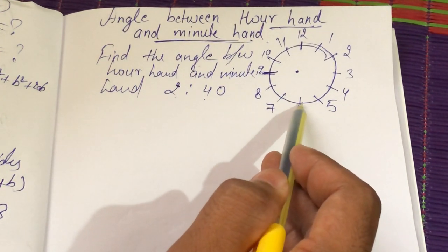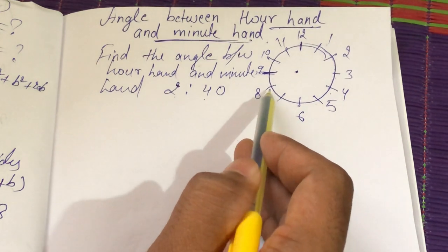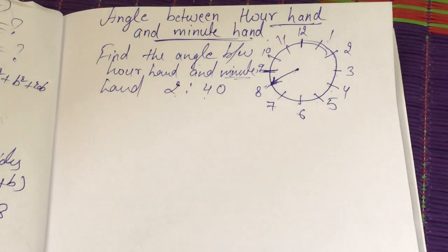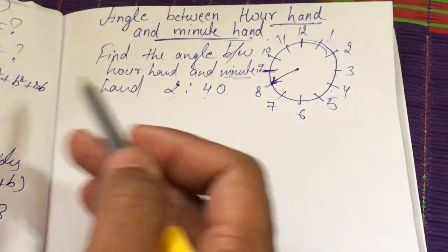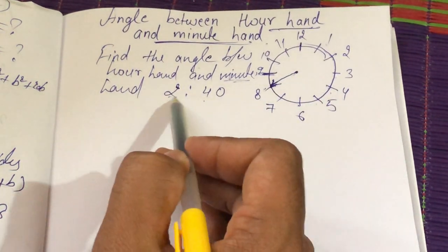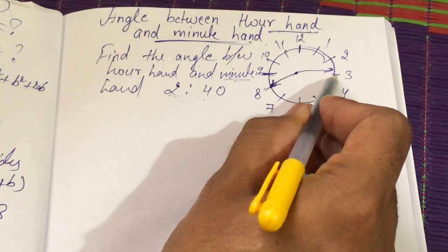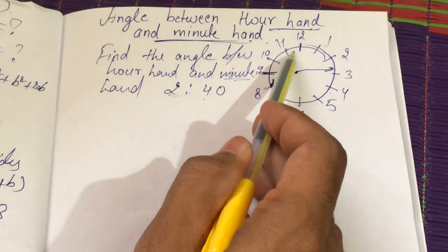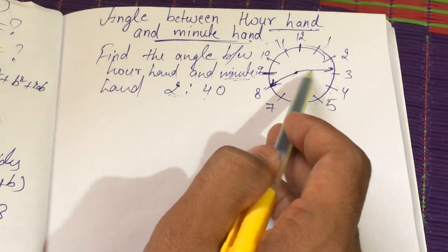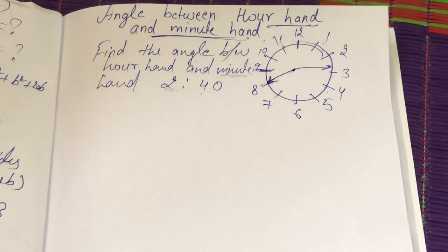At 2:40, the minute hand will be on 8 because 5, 10, 15, 20, 25, 30, 35, 40 minutes means the minute hand is on 8. The hour hand will be somewhere between 2 and 3, because at exactly 3 o'clock it would reach 3, but at 2:40 it will have moved forward from 2 but not yet reached 3. So now, how do we find the angle between them?